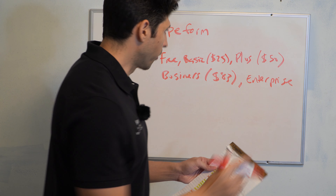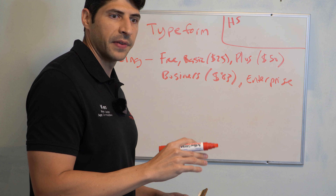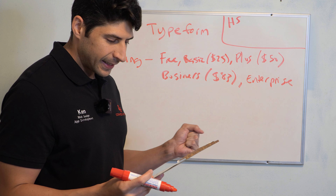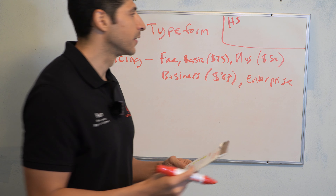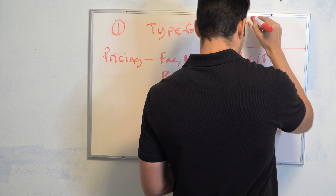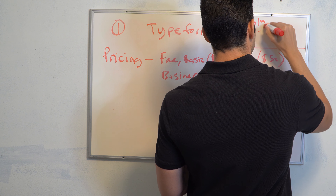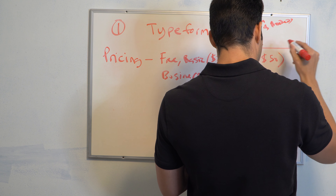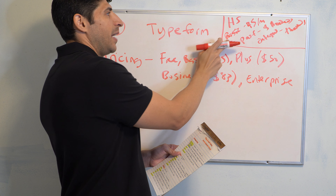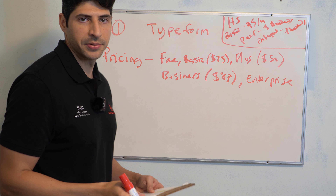Let me also quickly cover HubSpot pricing, though these prices are based on the CRM itself since they don't really have separate pricing for forms. They have a basic at $45 per month, a Professional at hundreds per month, and an Enterprise at $1,000 per month. Again, this doesn't mean much because I could only find pricing on the CRM itself — so just go to their website to find the forms pricing.